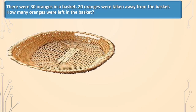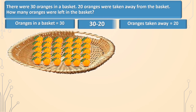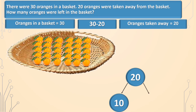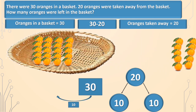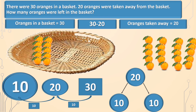There is another method to solve this sum. We know there are 30 oranges in a basket and 20 oranges are taken away. To subtract, we will split 20 into 2 parts: 10 and 10. From 30 oranges, 10 are taken away, so 20 are left. And from 20 oranges, 10 more are taken away. Now 10 oranges are left in the basket.